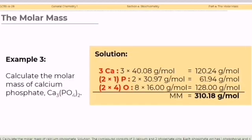Example number three. Calculate the molar mass of calcium phosphate. Solution. The compound consists of three calcium and two phosphate ions. Each phosphate ion has one phosphorus and four oxygen atoms. All in all, we have three calcium, two phosphorus and eight oxygen atoms. Multiplying the quantity by the molar mass for each element, we have 3 times 40.08 grams per mole for calcium, 2 times 30.97 grams per mole of phosphorus, and 8 times 16 grams per mole for oxygen.